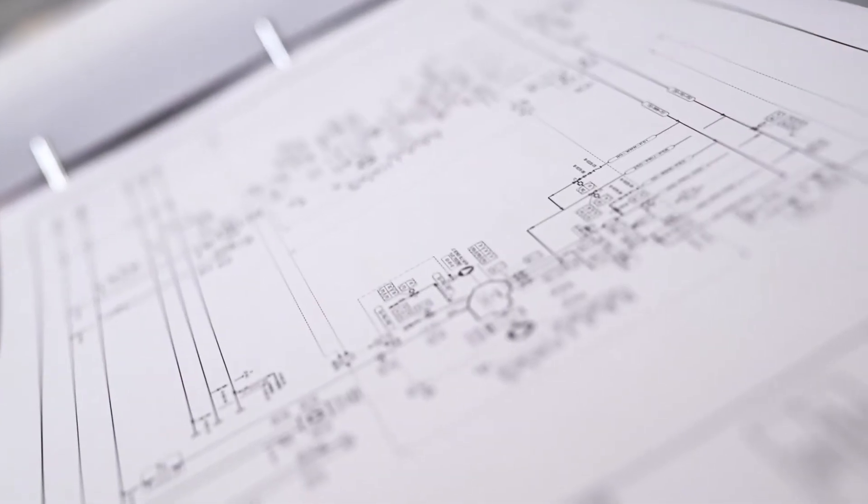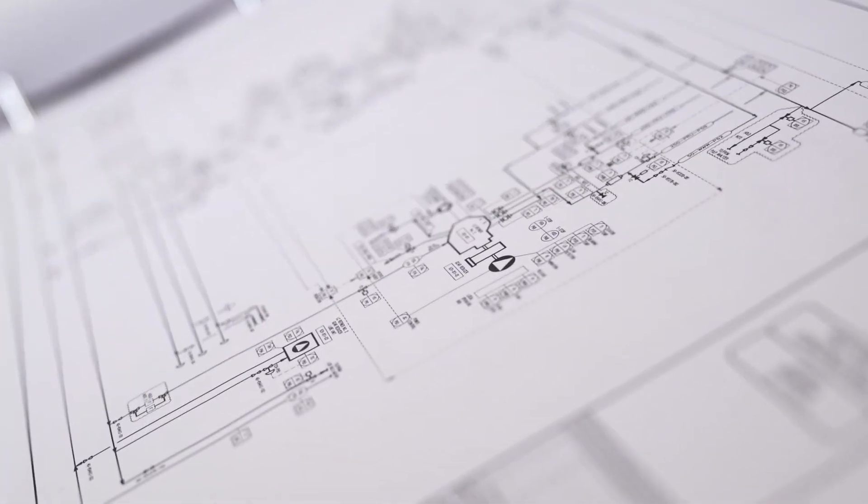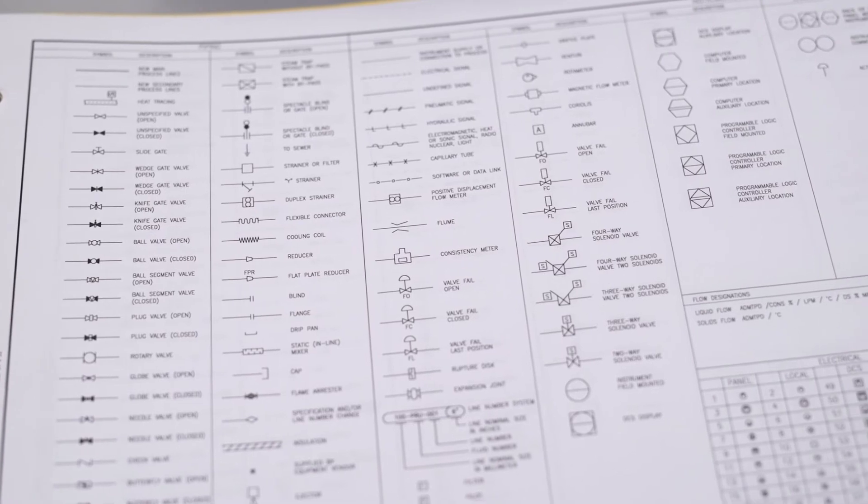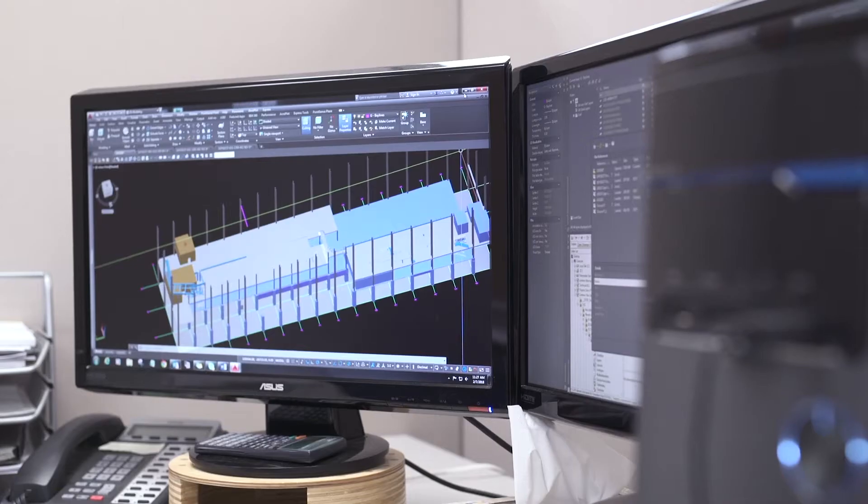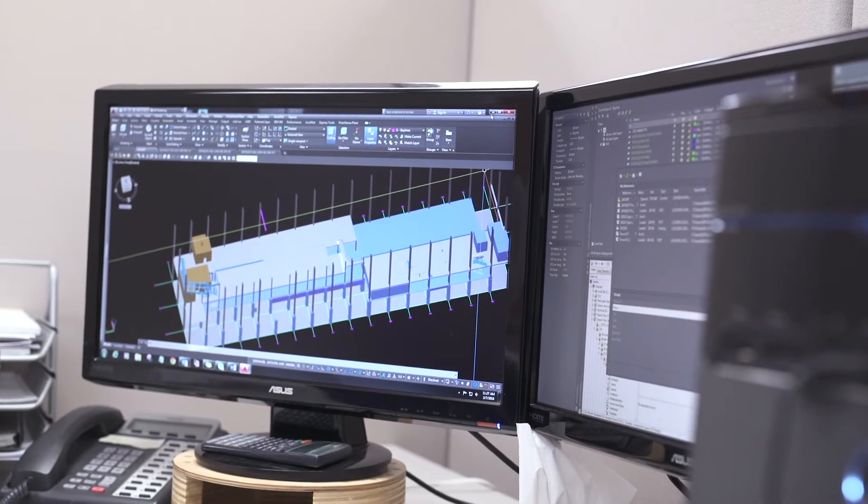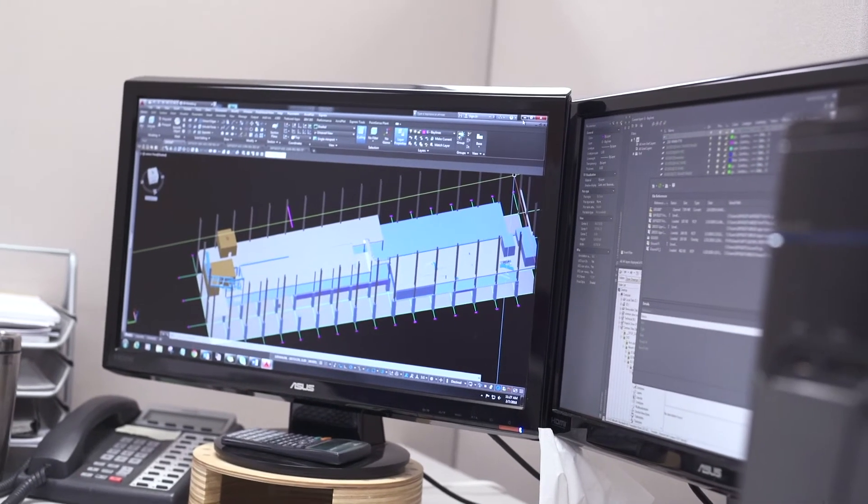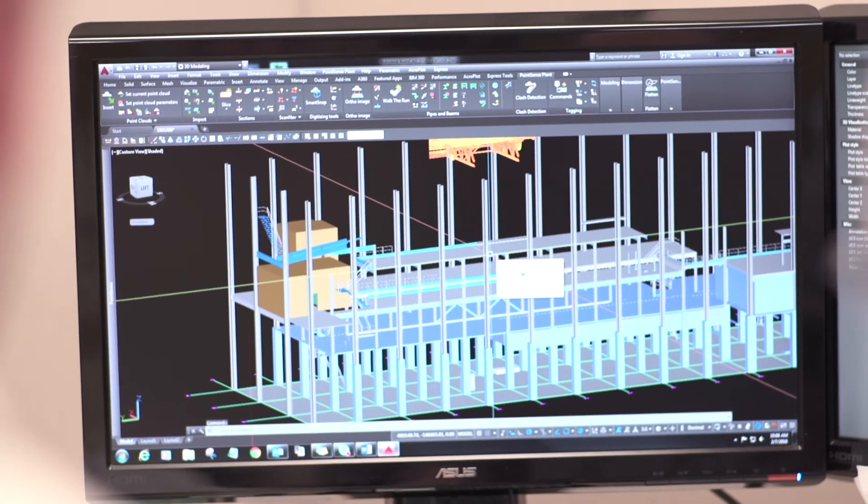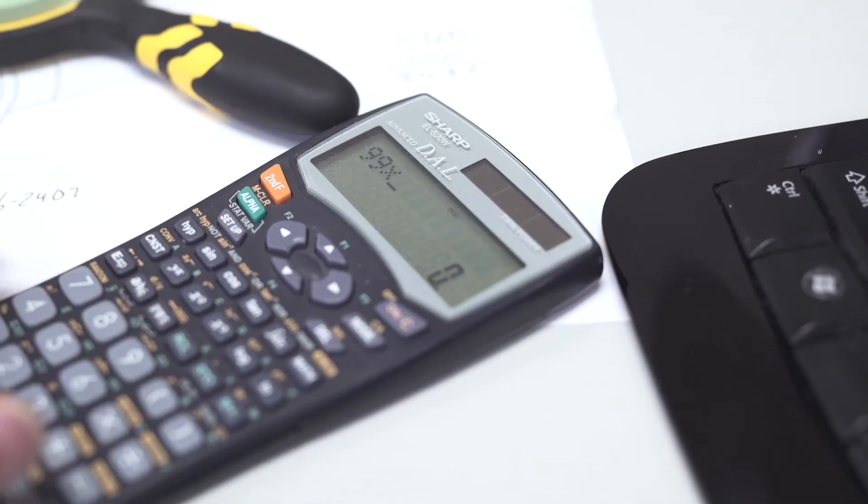Spatial perception is quite important. It's important to be able to look at a 2D drawing and try to visualize a 3D object. I might be presented with a problem where I have to find a way to get a pipe run from a pump to a vessel, and there's a lot of congestion in between that I have to find a route for the pipe through.